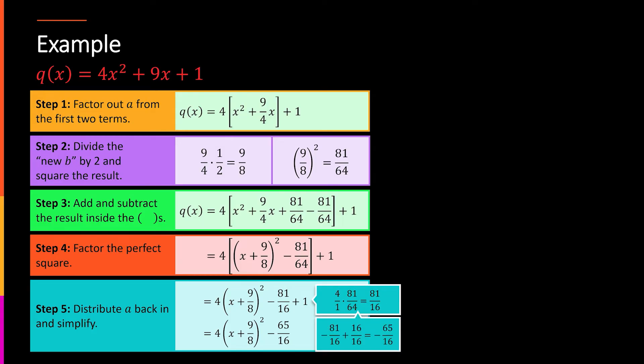Then add 1. Do that by adding, getting a common denominator. So making it 16/16. Adding the like things. This one's negative. So I'm going to end up with this -65/16. That's where this number comes from. And of course, because I distributed the 4, the 4 is hanging out in front of this piece here. So that is the completed the square end there.